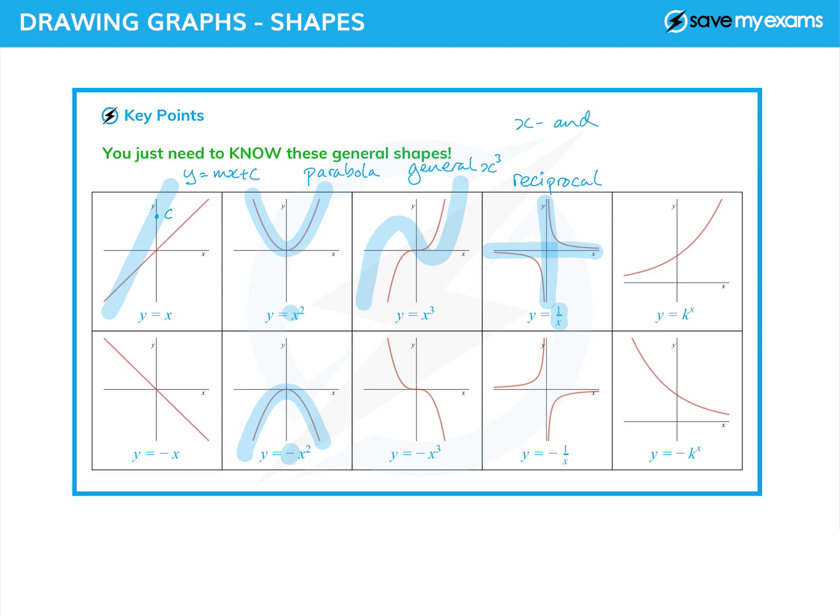Asymptotes - that's how you spell it - they are lines towards which the curve tends but doesn't reach. And there's another asymptote in the next graph - the x-axis is an asymptote here. And this graph though is the exponential graph.